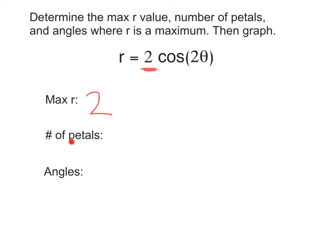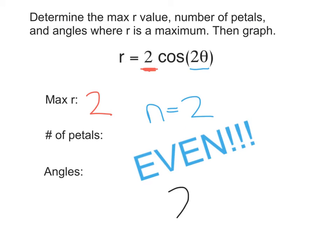Awesome. Next, number of petals. For this, we want to look at what is next to theta. In this case, it is two theta. So, n equals two. This is even. That means we are going to multiply our n value times two. That's our n multiplied by two to give us our number of petals, which is going to be four.